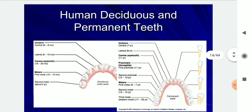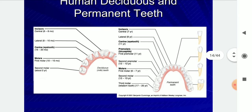Human deciduous and permanent teeth include incisors, lateral incisors, canines, molars, and second molars.